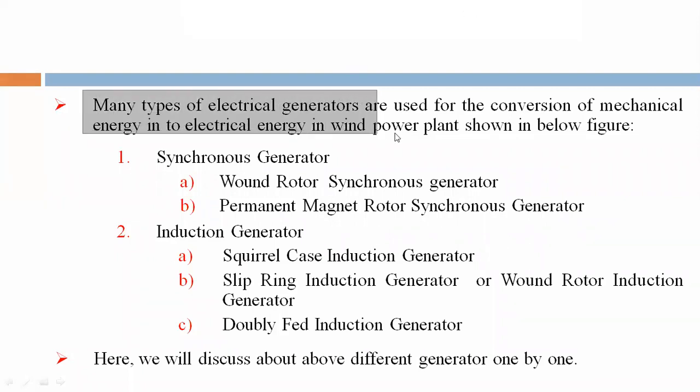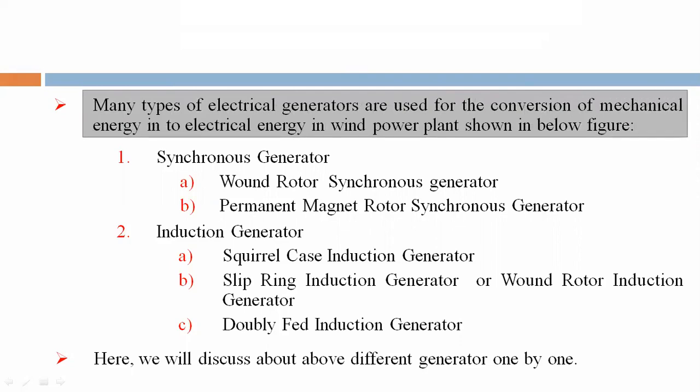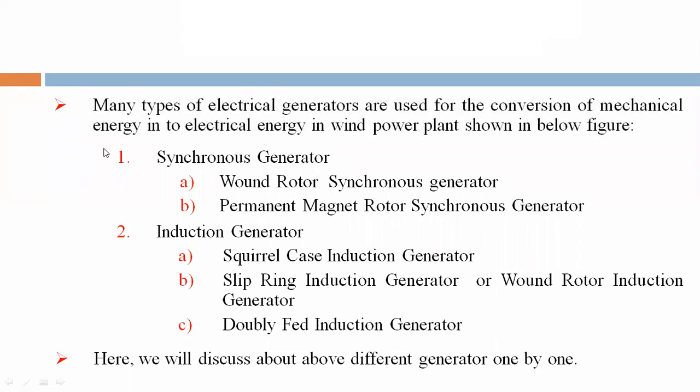Many types of electric generators are used for the conversion of mechanical energy into electrical energy in wind power plants, as shown in the figure below. First: Synchronous Generator.